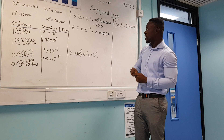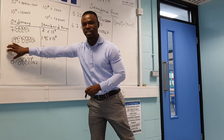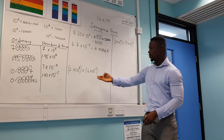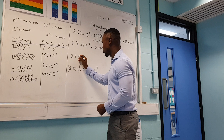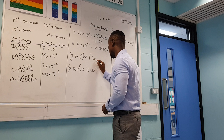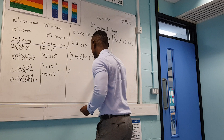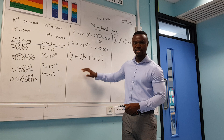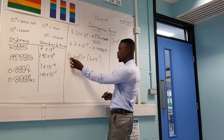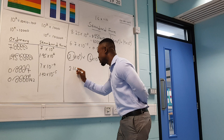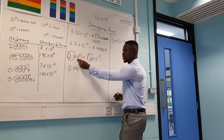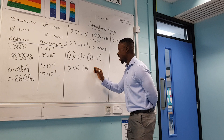Now let's look at some questions typical of GCSE exams. Here is: 2.1 times 10 to the power of 8, multiplied by 6 times 10 to the power of minus 5. Whenever you have this type of non-calculator question, take your time. Group the numbers first: put 2.1 times 6 in one bracket, then the powers of 10 in a separate bracket — 10 to the power of 8 times 10 to the power of minus 5 — with a multiply sign in the middle.